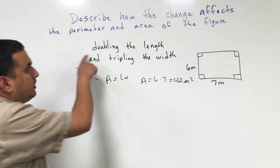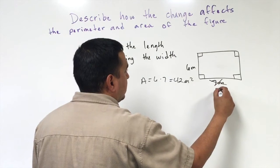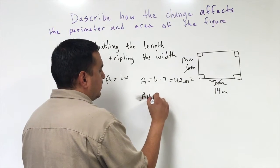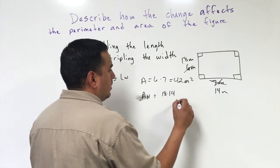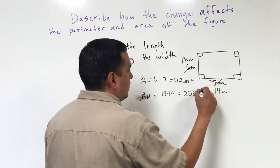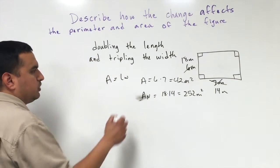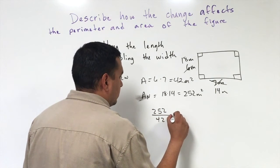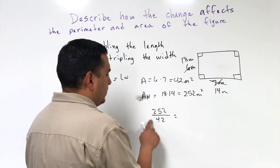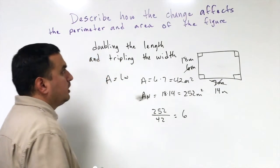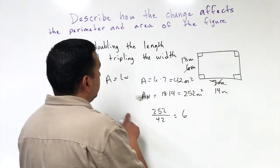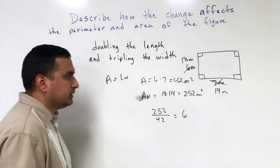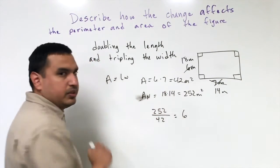If we double the length to 14 meters and triple the width to 18 meters, my new area is 18 times 14, which is 252 meters squared. To see how this is changing, I look at 252 over 42. Reducing that gives me 6, so the effect of doubling the length and tripling the width is a factor of 6 — I'm multiplying the original area by 6 to get 252 meters squared.